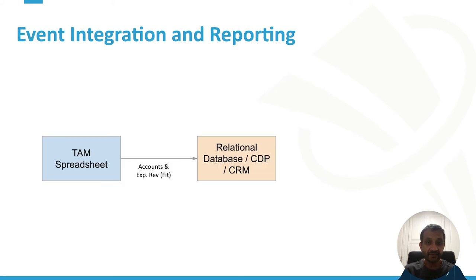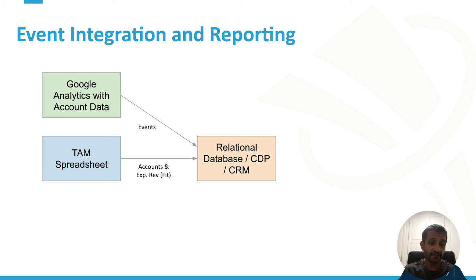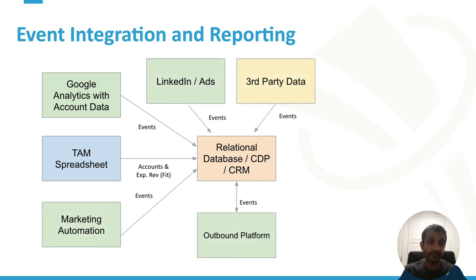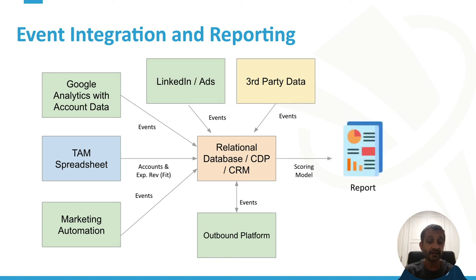To actually integrate those events and set things up correctly, you'll need a database of some kind in the middle — a traditional relational database, a customer data platform, or even your CRM if it's flexible enough. You start by feeding it your TAM spreadsheet, which includes your accounts and expected revenue or a fit score. Then you integrate your website data — typically you sync that reverse IP data as account data into Google Analytics and send the relevant events over to the database. Depending on your event sources, you can integrate all of them — from outbound to your ads, third-party data, and your marketing automation platform — into the same database. From that, you'll be able to run queries to generate an account-prioritized report showing both fit, expected revenue, and intent.